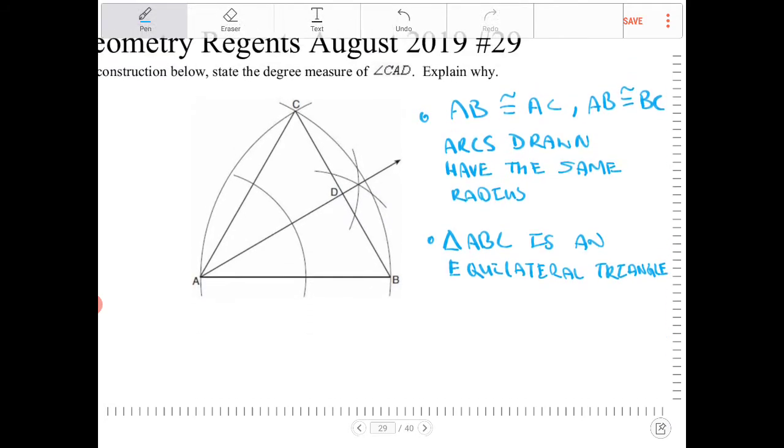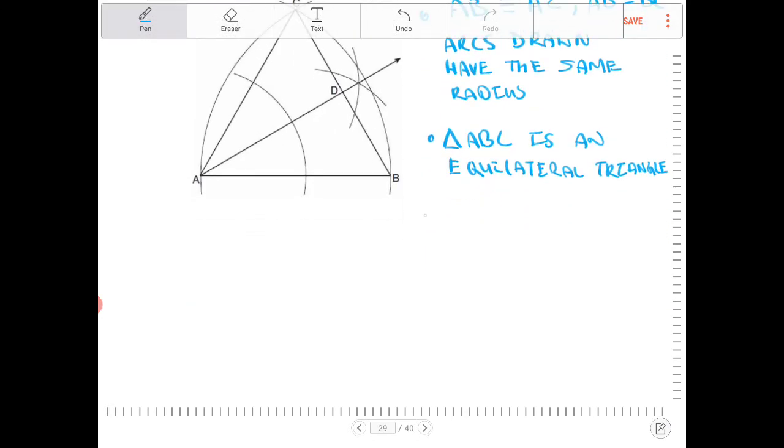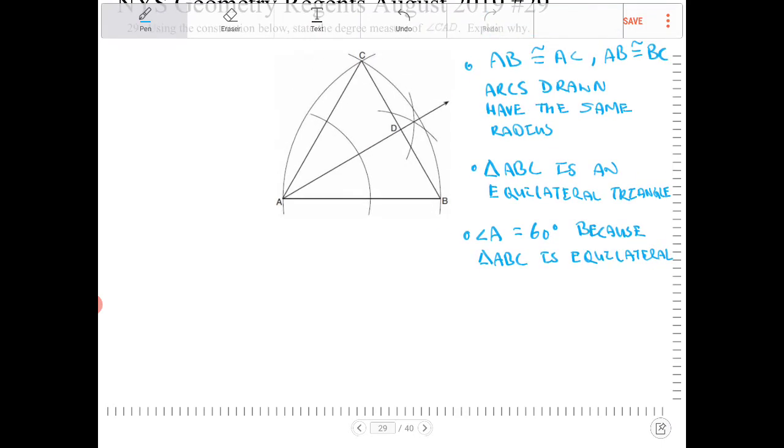Because ABC is an equilateral triangle, then angle A is equal to 60 degrees, since triangle ABC is equilateral.